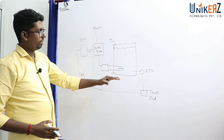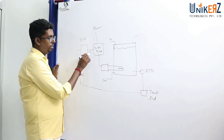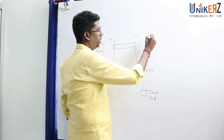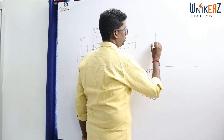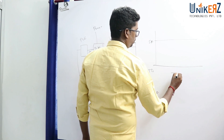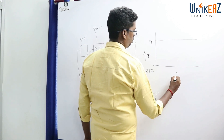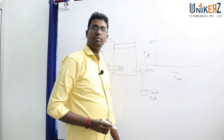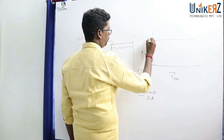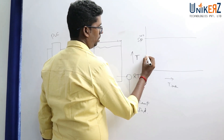Temperature is measured and fed back as an analog input. Here, the output is a digital output. The graph shows temperature on the Y-axis and time on the X-axis. The setpoint is 40, and the actual temperature is 22.